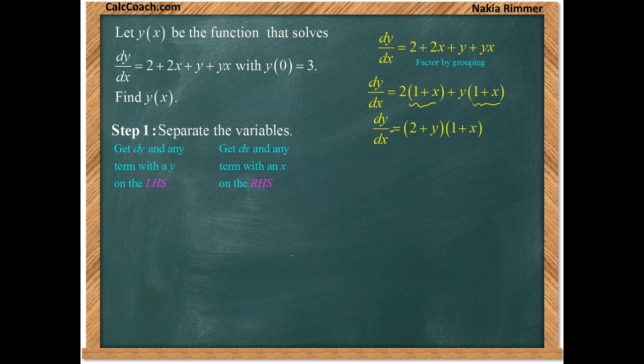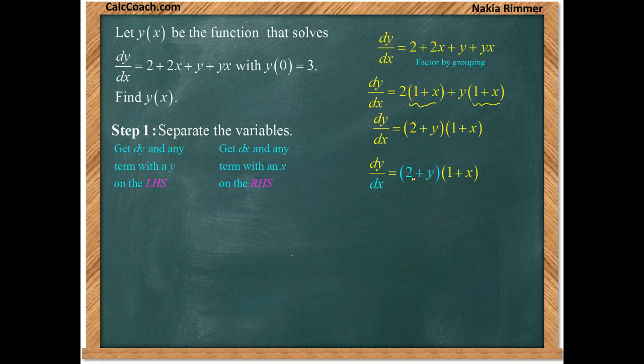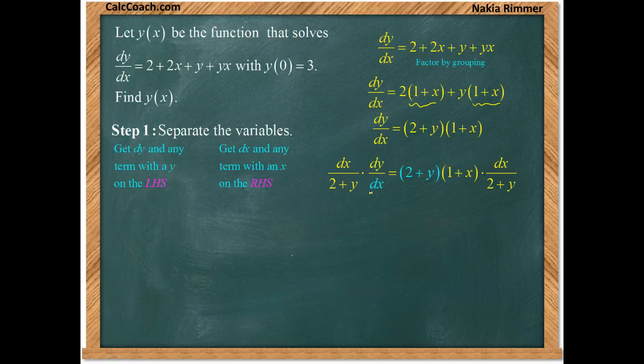Now I can start separating the variables by moving what's on the wrong side to the correct side. 2 + y should not be on the right-hand side. So we'll multiply by dx and divide by 2 + y. That'll accomplish the moving that we want.